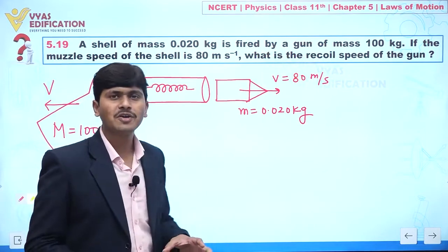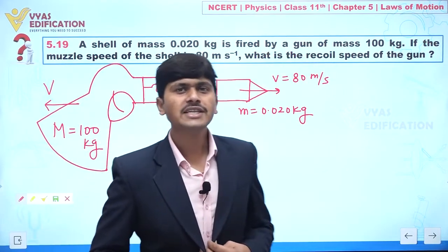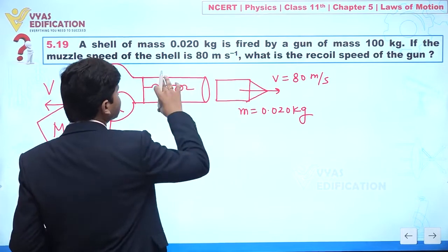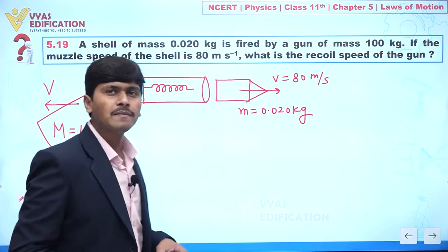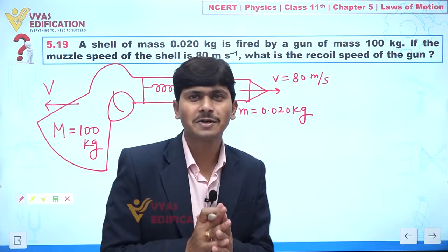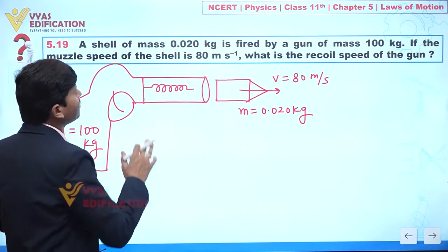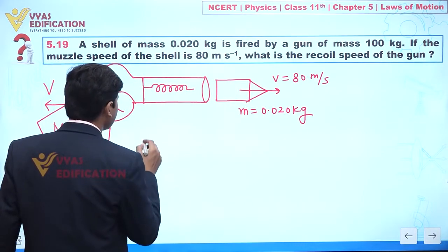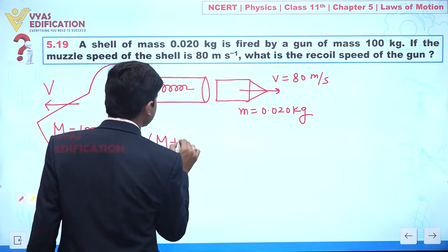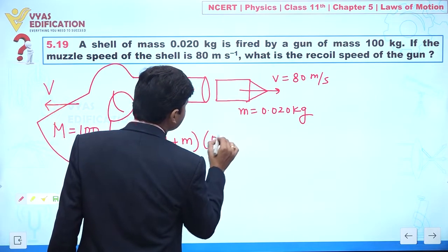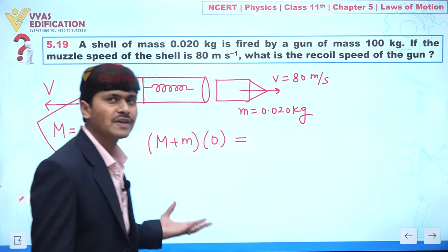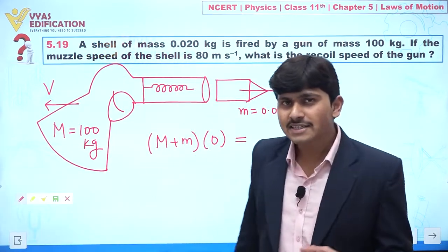Initially, let's assume the shell is inside the gun, and we treat the shell and gun as one system. At that point, both are at rest. So the initial momentum is (M + m) × 0 = 0.